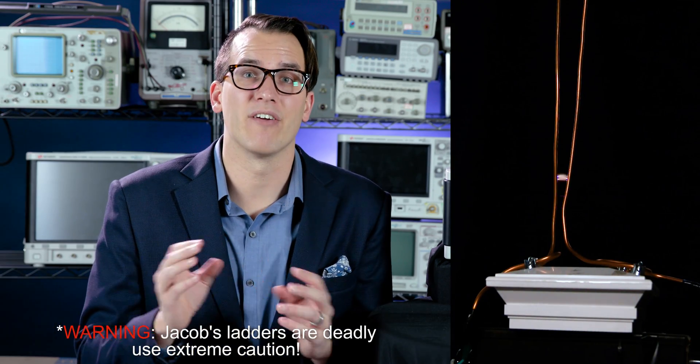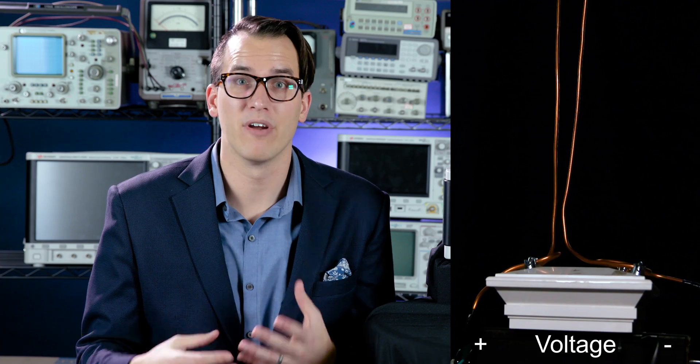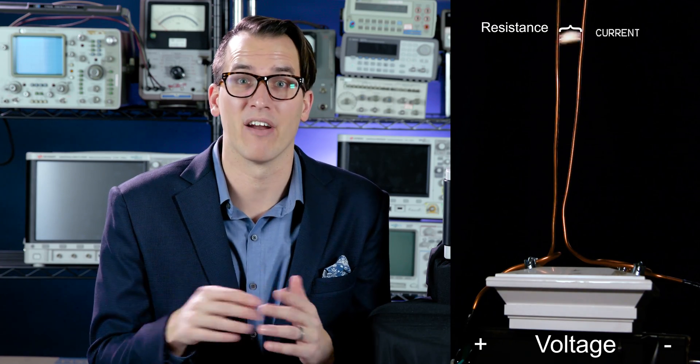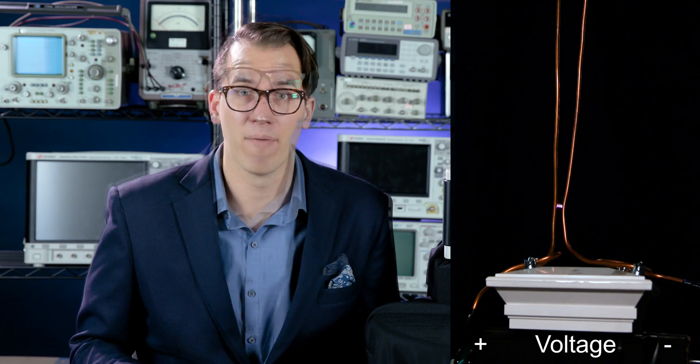Now Ohm's law is an empirical law, which in two-minute guru terms means it works when it works and not when it doesn't. Take for example the Jacob's Ladder. When the electrodes are close enough together, there's voltage from the transformer, there's current between the electrodes, and there's resistance in the ionized air. It's roughly going to follow Ohm's law.